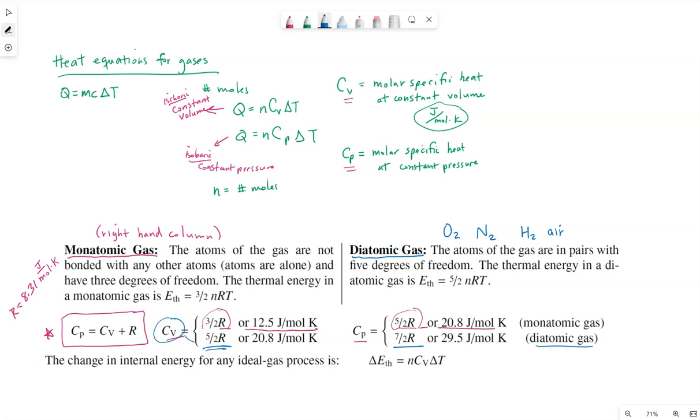So C V is one of these two values. The top value is monatomic, the bottom value is for diatomic gases. Similarly, C P is one of these two values, the top value for monatomic, the bottom value for diatomic gases.